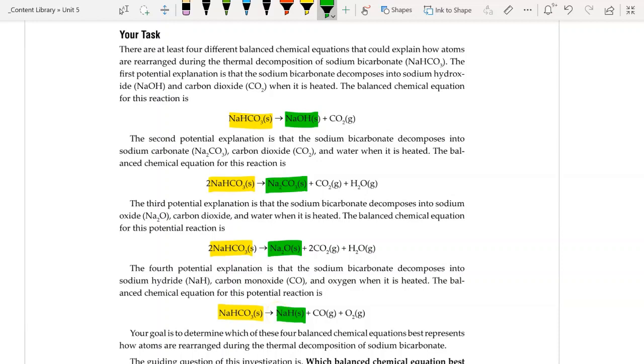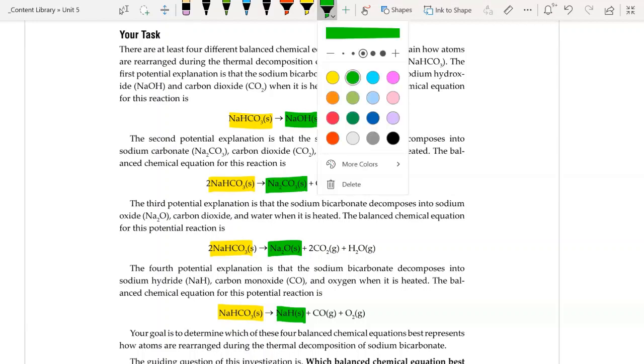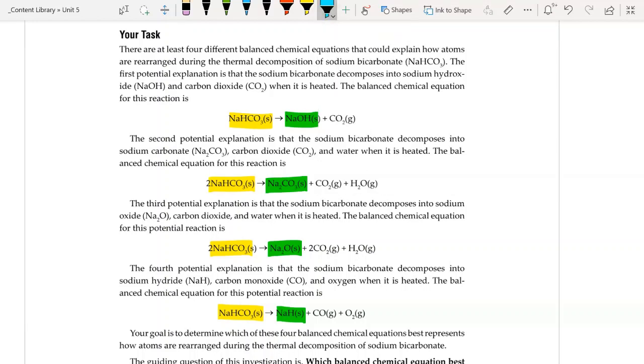And then on the right side of each of these four equations, we have a solid product. And if you remember in the lab, we did end up with a solid in our crucible when we finished heating. Now, if you look in each of the equations, we have a solid and then we also have either one or two gas products.